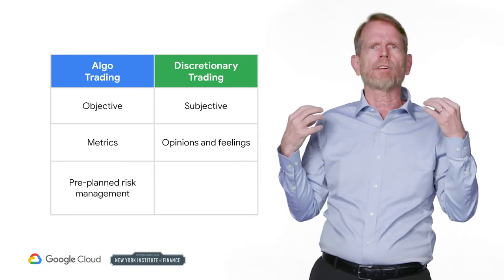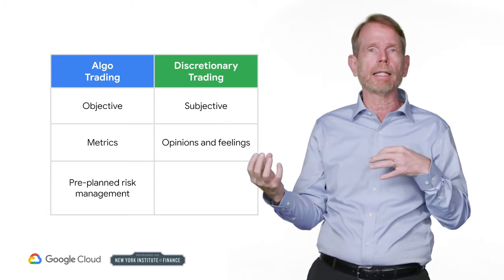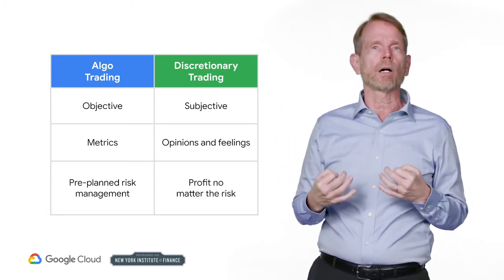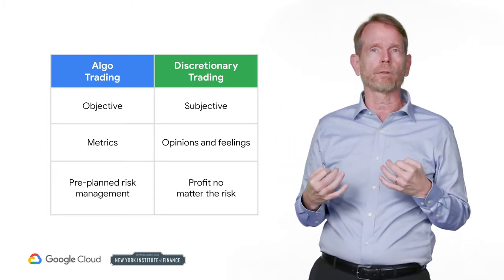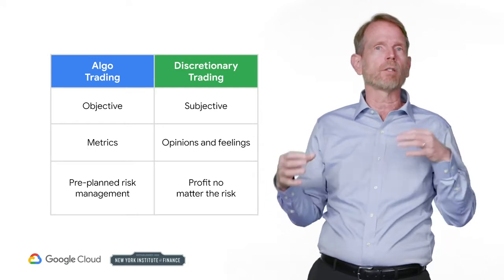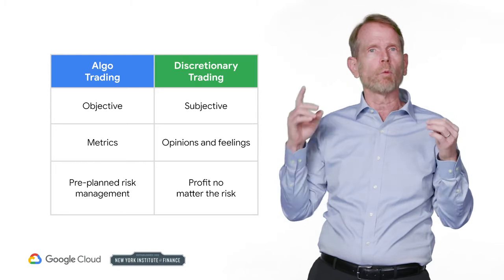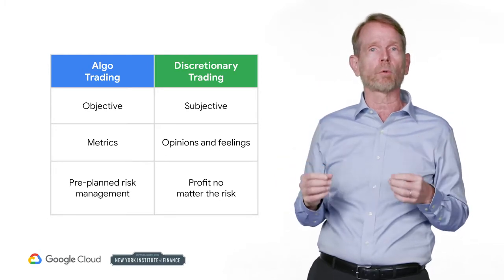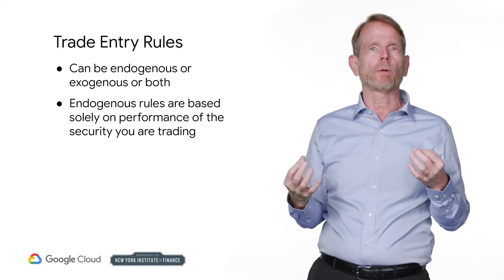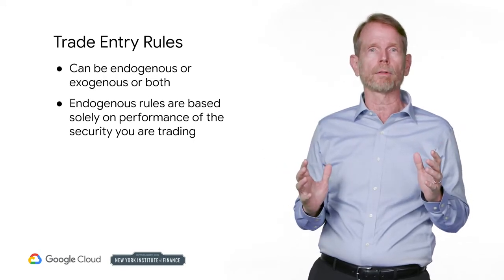Decisions will be affected by their P&L month to month or year to date in an attempt to end the year up in profits. Risk tolerance will change as they may take greater risks to offset losses or to have one sizable trade to make them profitable. The algorithmic trader avoids these issues by being objective up front.